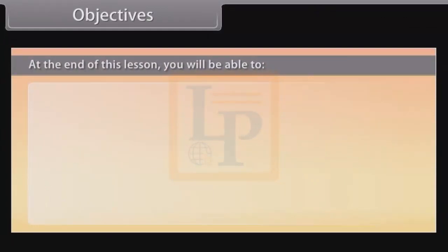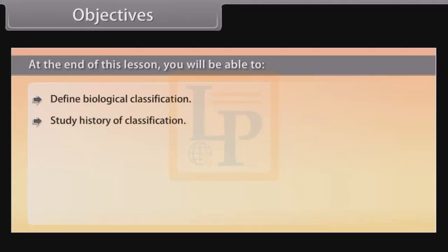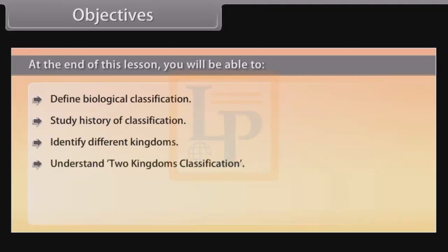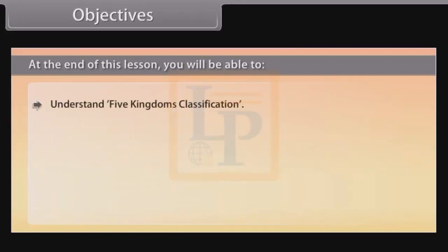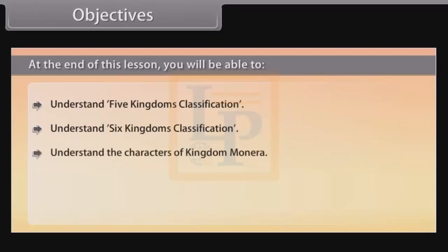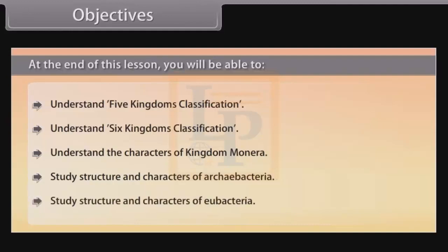At the end of this lesson, you will be able to: define biological classification, study the history of classification, identify different kingdoms, understand two kingdoms classification, study three kingdoms classification, know about four kingdoms classification, understand five and six kingdoms classification, understand the characters of Kingdom Monera, and study the structure and characters of archaebacteria and eubacteria.